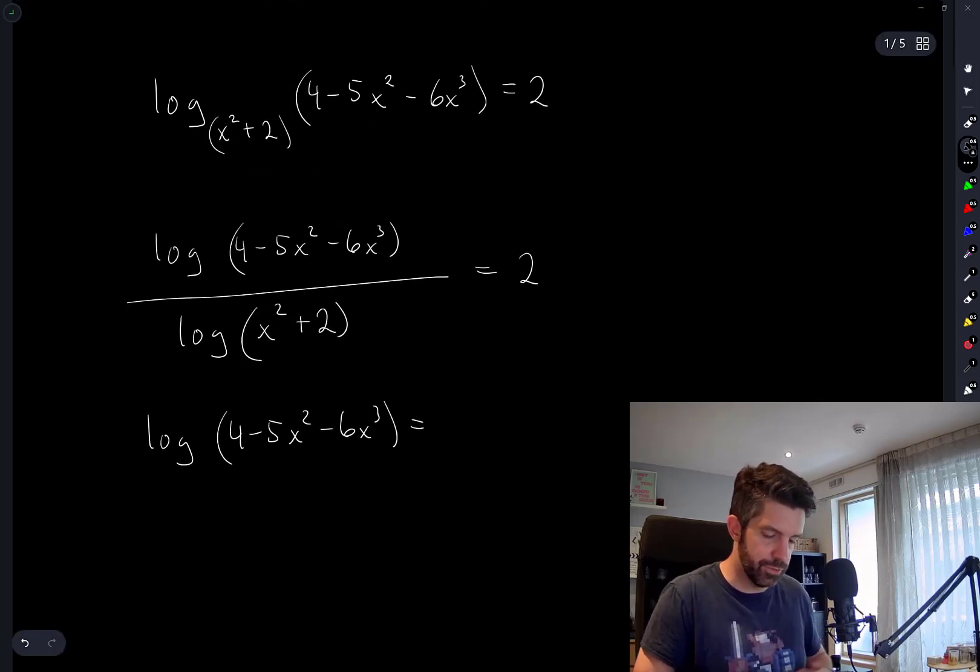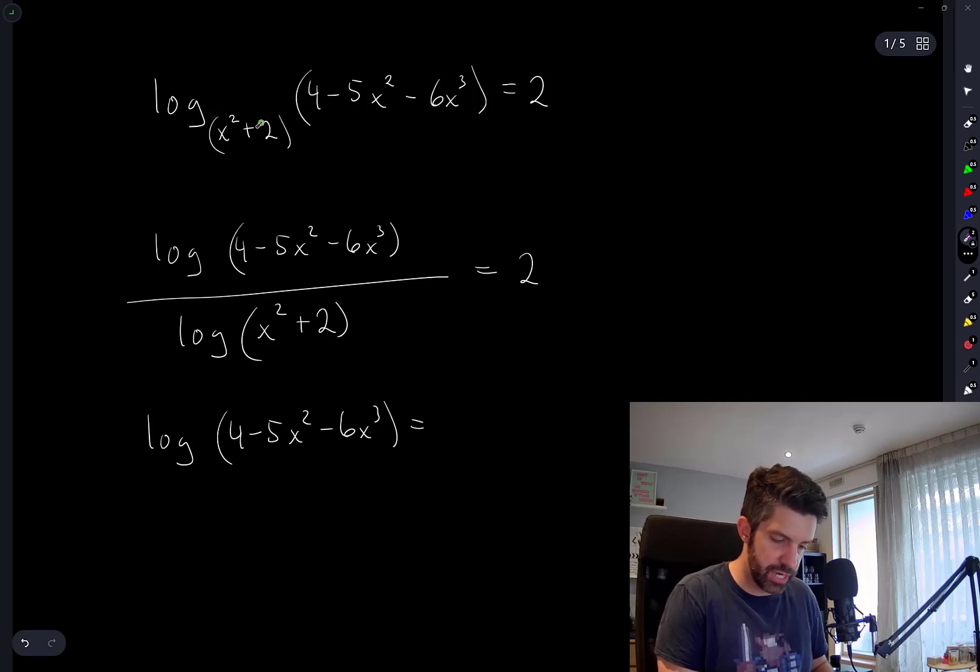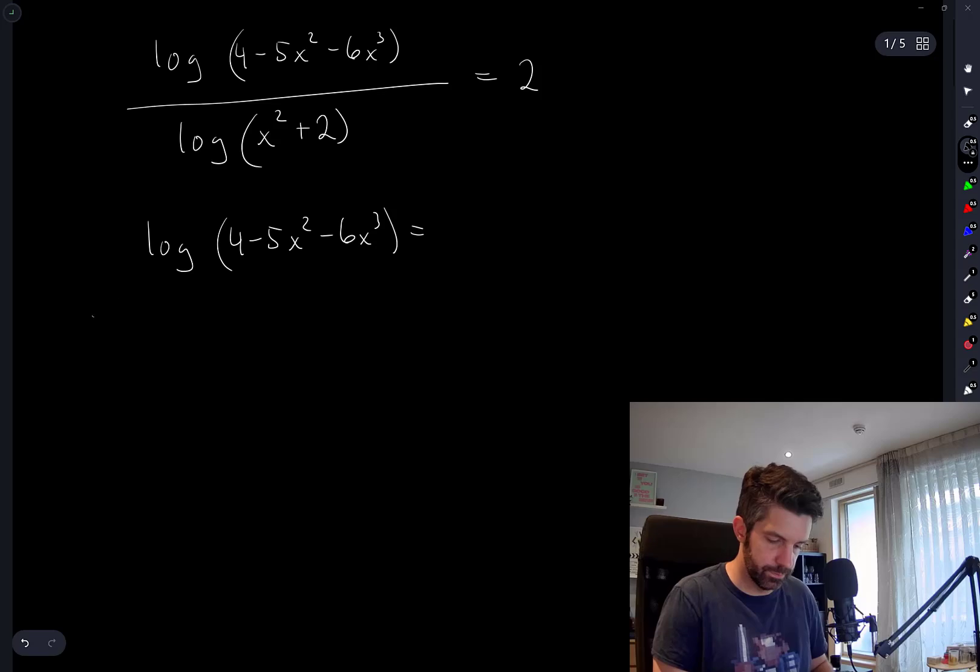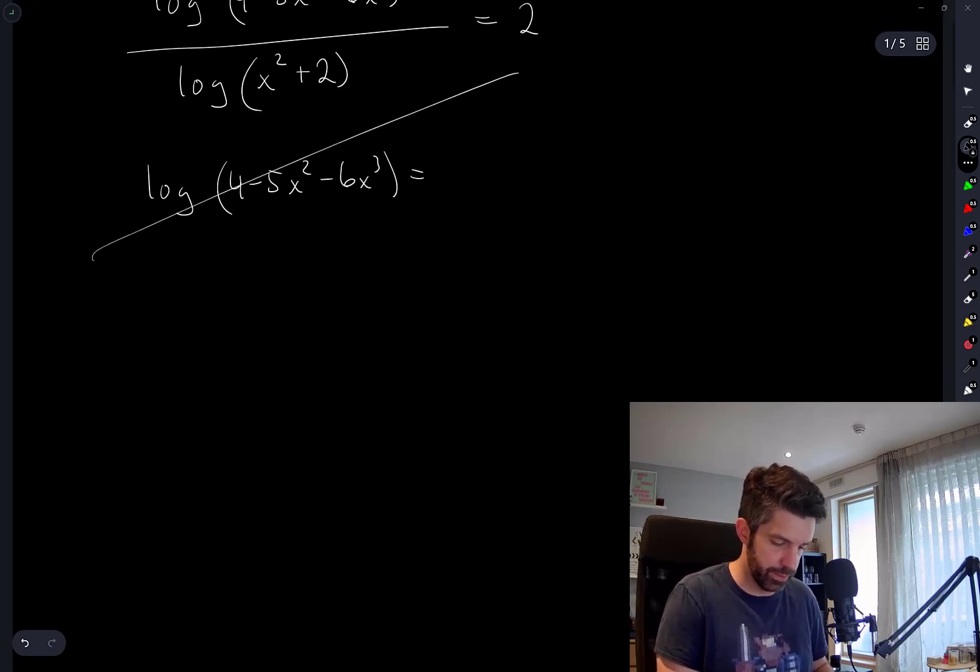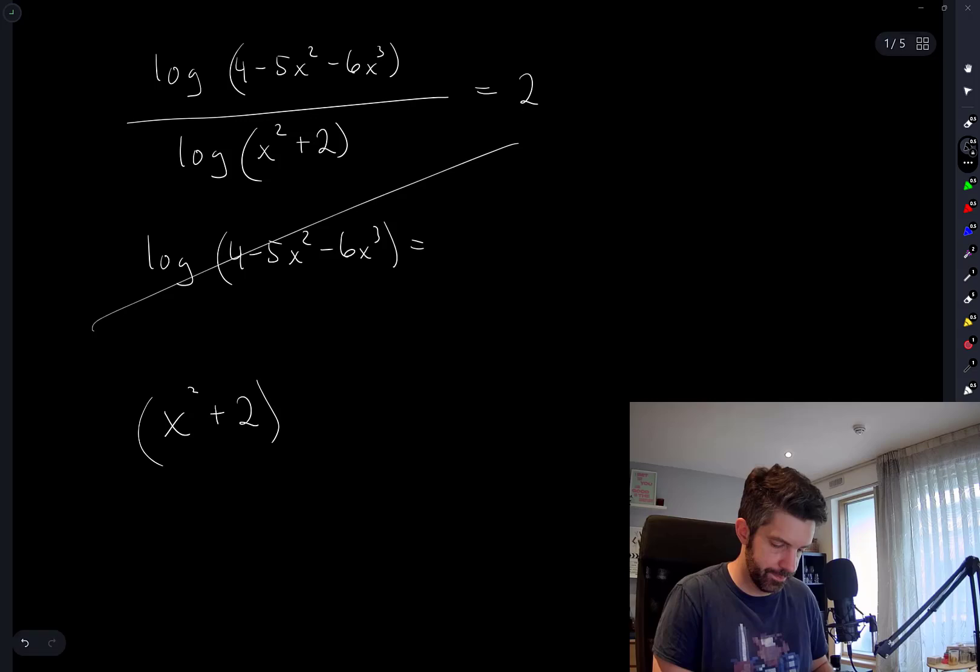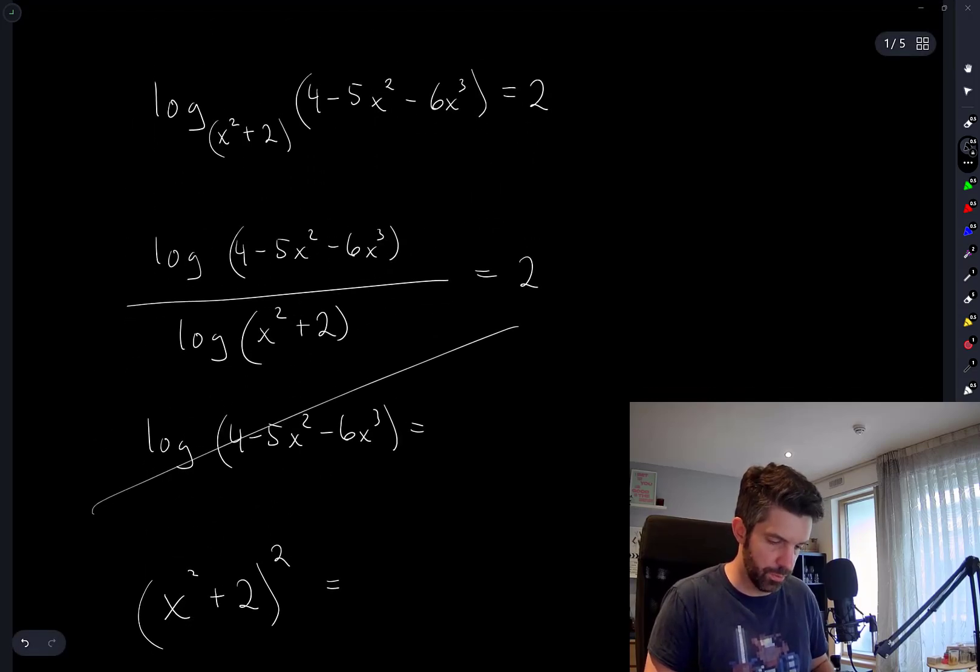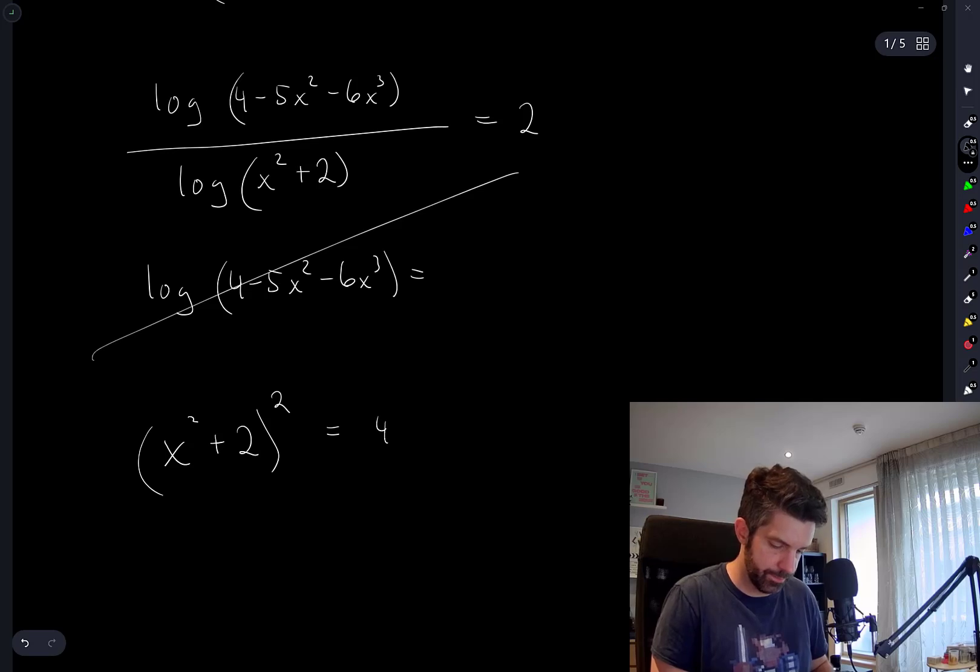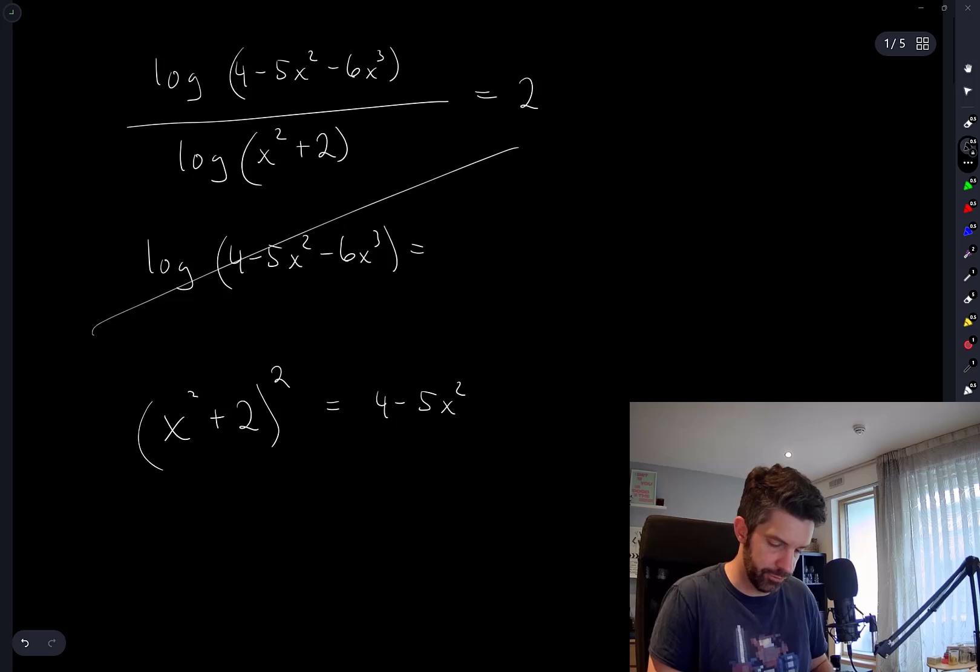You know what, I don't even have to do that. I can immediately just exponentiate with respect to that base. So let's do that. I have x squared plus 2, squared, equals 4 minus 5x squared minus 6x cubed.